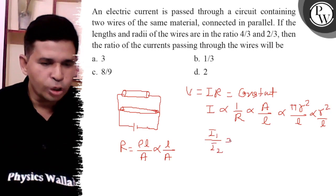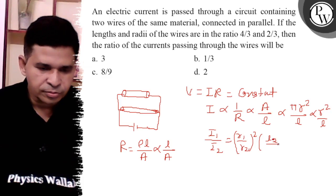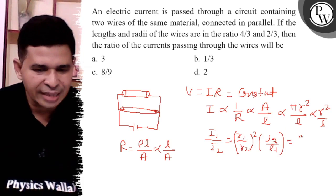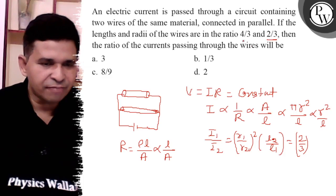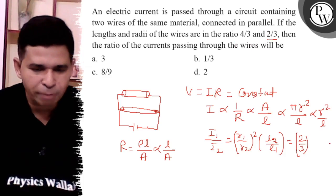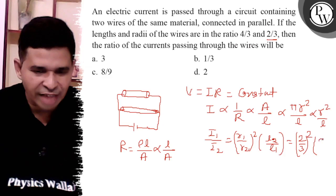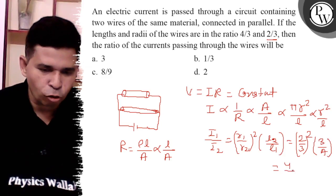I1 over I2 is equal to R1 upon R2 whole square and L2 by L1. R2 is 2 by 3 whole square. The ratio of length is 4 by 3. L2 by L1, the reverse of that is put here because it is L2 by L1. So it is 4 by 9 into 3 by 4.